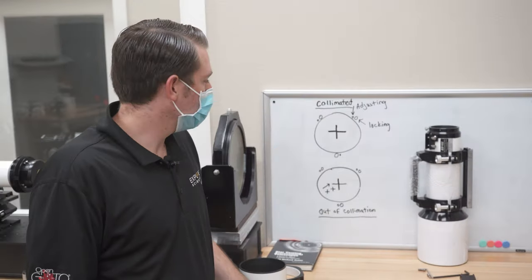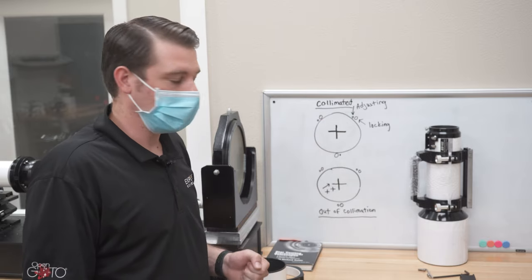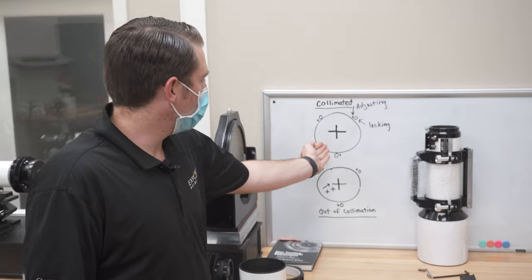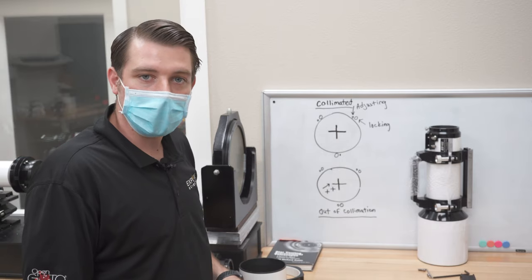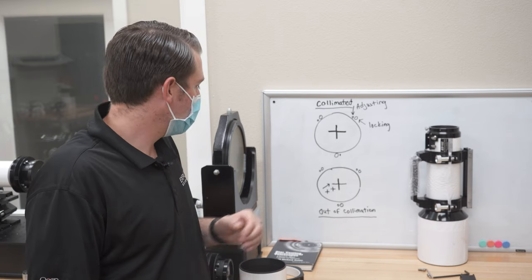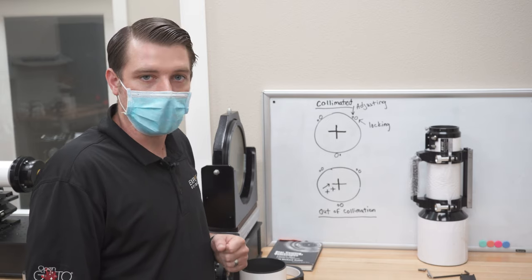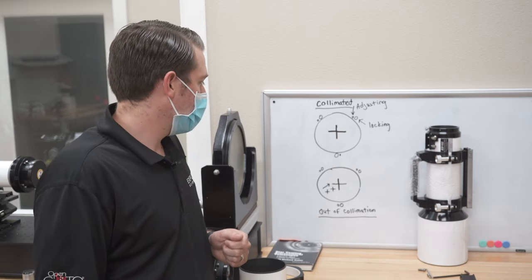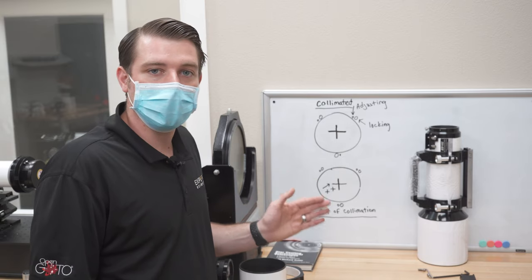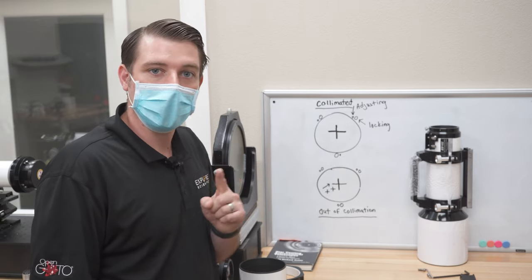Here we have two examples, one of a collimated lens cell and one that is out of collimation. The collimated lens cell, you can see there's one solid crosshair in the center of the optics. The out of collimation, you will see anywhere from two to three crosshairs that are out of place, not in the center. So our goal is to bring those in and stack them on top of each other to create that one solid crosshair.